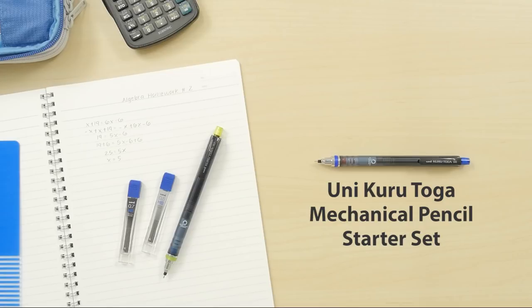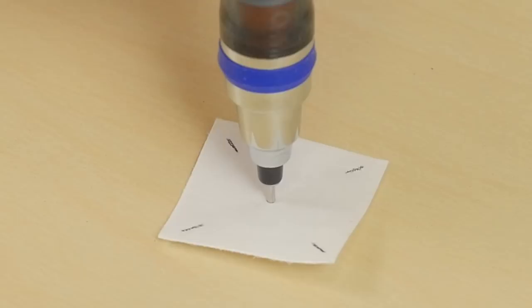The UniKuritoga Mechanical Pencil is cleverly designed to rotate the lead and wear it down uniformly. This allows it to keep a consistent sharp point.